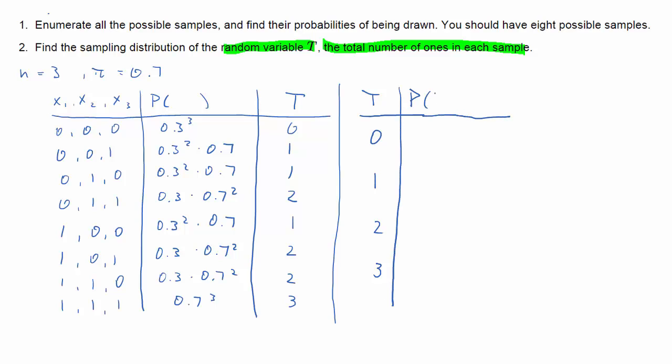So let's start with the probability that that random variable takes the value 0. There's only one outcome, the first one, and the probability of that is 0.3 to the power of 3. And I said I'll correct that later. It should be 0.3 to the power of 3. What about it taking a value of 1? There are 3 outcomes here, and they all have the same probability. So it's 3 times 0.3 to the power of 2 times 0.7.